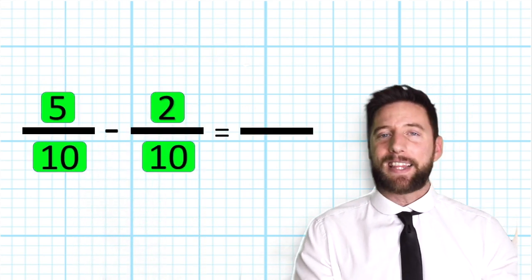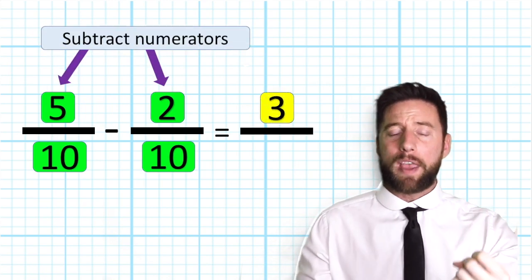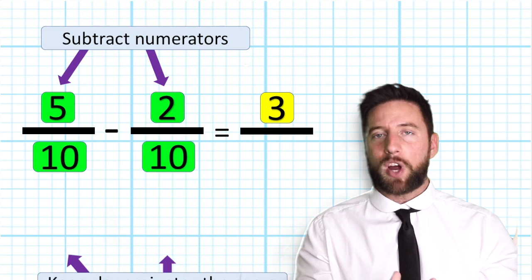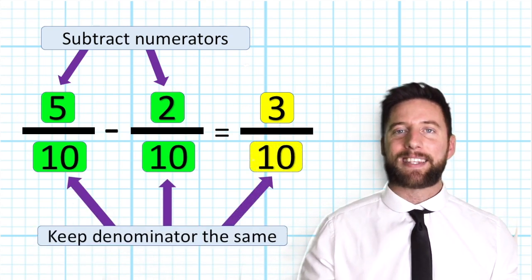Let's have a look. If we have 5/10 subtract 2/10, what am I doing? I'm taking two away from the five. Five subtract two is three, we haven't changed the value of the fraction, so we have 3/10. Simple, how easy could this be?